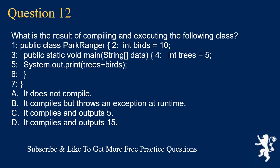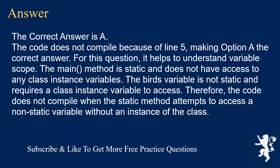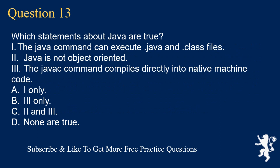Question 12: What is the result of compiling and executing the following class? Line 1: public class ParkRanger, line 2: int birds = 10, line 3: public static void main(String data), line 4: int entries = 5, line 5: System.out.print(trees + birds). Options: A) does not compile, B) compiles but throws exception at runtime, C) compiles and outputs 5, D) compiles and outputs 15. The correct answer is A. The code does not compile because of line 5. The main method is static and does not have access to instance variables. The birds variable is not static, so the static method cannot access it without an instance.